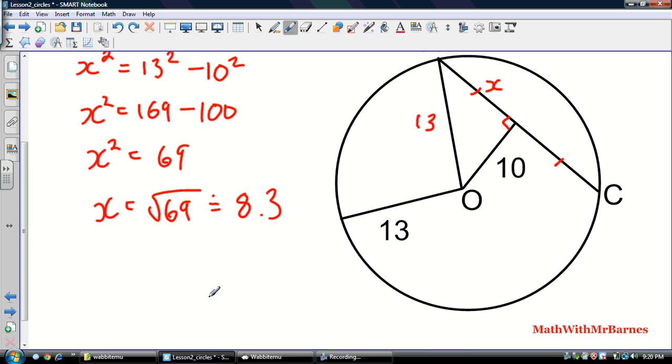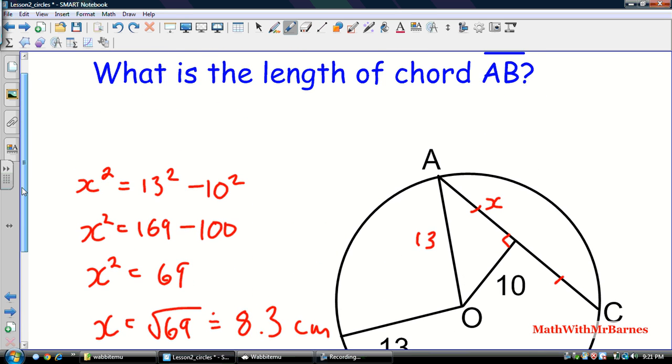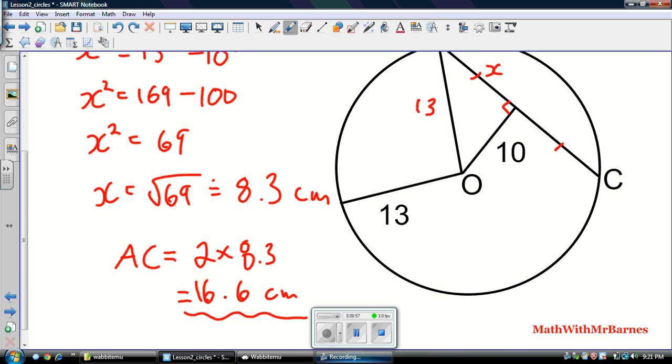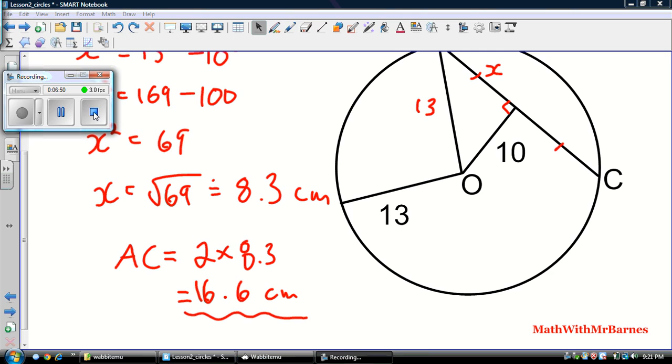So now that's only x, we need AC. So AC, we're just going to multiply this guy by 2. So 2 times 8.3, that's going to be 16.86 centimeters. And there it is. All right, guys, so this is a common question, multiple choice question on a public exam. Make sure you know Pythagorean theorem. Good luck with your studying. See ya.